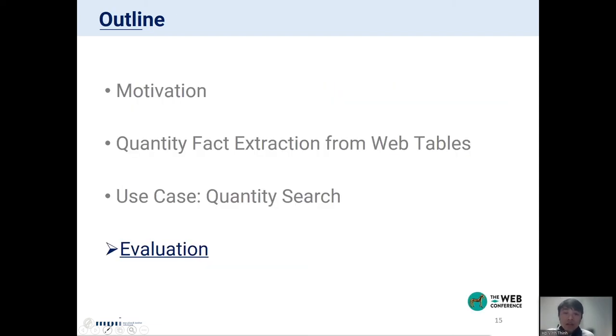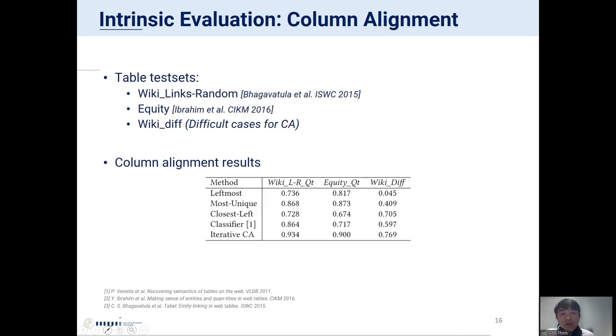For the evaluation. For the intrinsic evaluation of QFact extraction, we use three web table test sets. The first two are from earlier work, and the third one is compiled by us, called WikiDiff, containing only complex tables for the column alignment task. We compare our column alignment method with different baselines, including simple heuristics as mentioned before, and also with a classifier for the subject column, also from one of the earlier works. As you can see, our column alignment method outperformed the baselines, especially by large margin on the WikiDiff dataset.